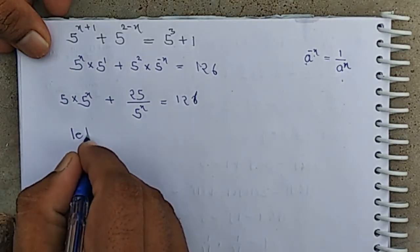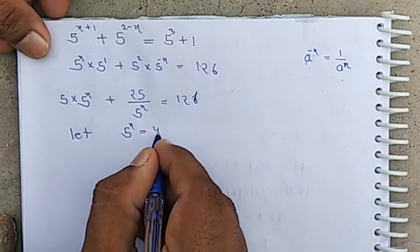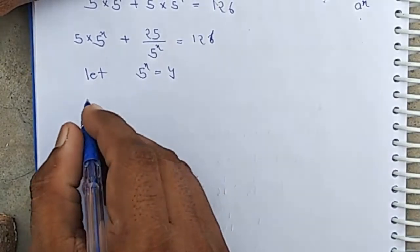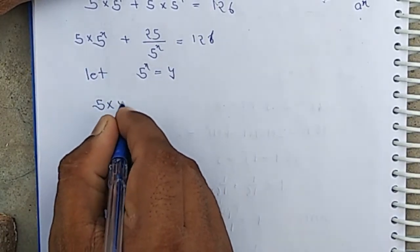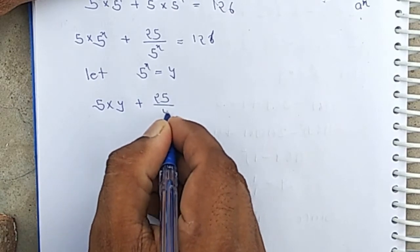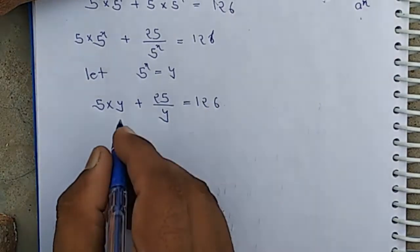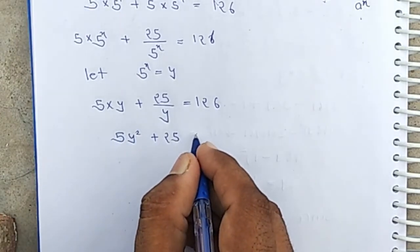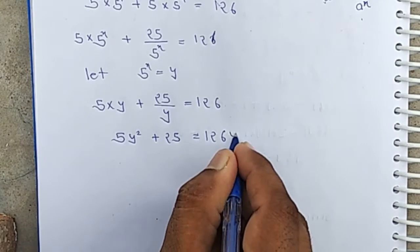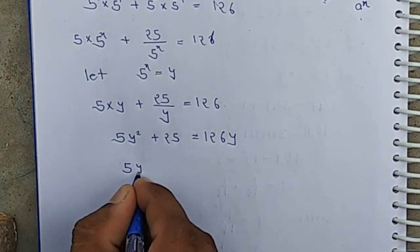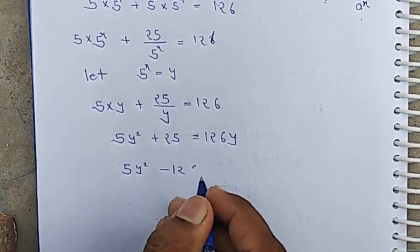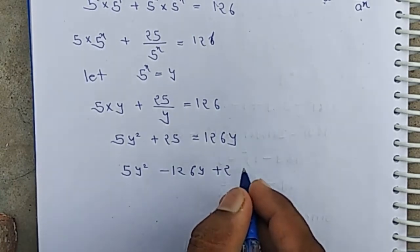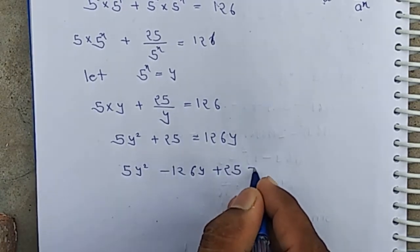Now let 5 to the power x equal another variable y. We have 5 into y plus 25 by y equal 126. Then 5y squared plus 25 equal 126y, giving us 5y squared minus 126y plus 25 equal 0.